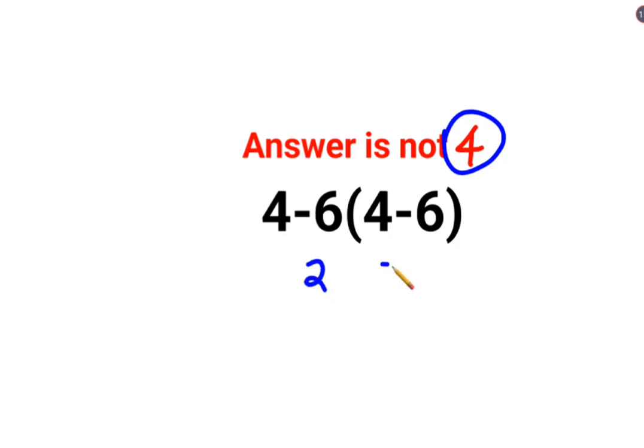4 minus 6 is 2 and there is no sign between this 6 and the bracket means it is multiplication. Answer is supposed to be 4.